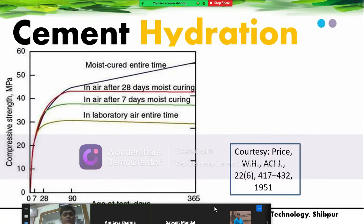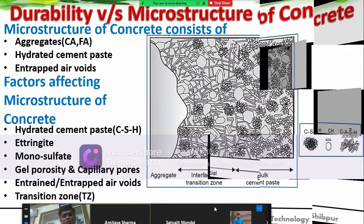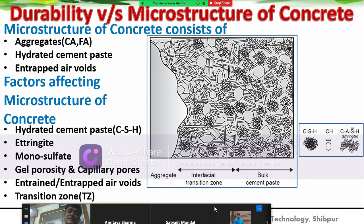Cement hydration: cement reacts with water for more than one year—the reaction continues—but in our code we take 28 days as the standard. All Indian and international standards specify the 28-day strength as the benchmark, but cement hydration continues beyond that. The microstructure of concrete consists of aggregates such as sand and coarse and fine aggregate, hydrated cement paste, and entrapped air voids in the cement concrete matrix.